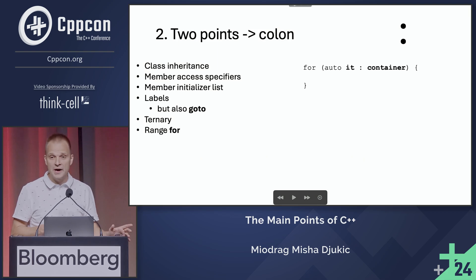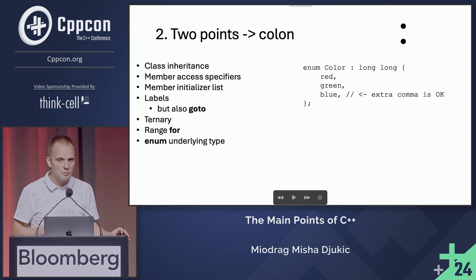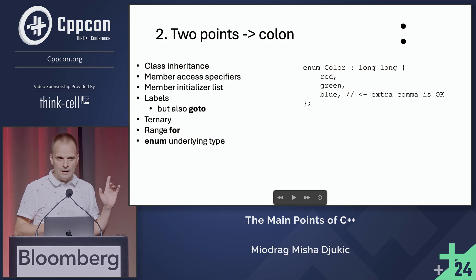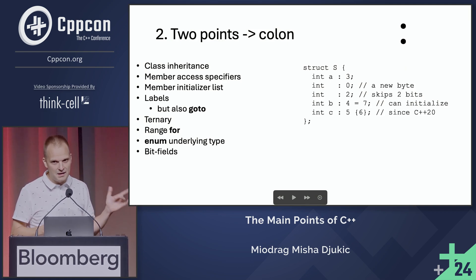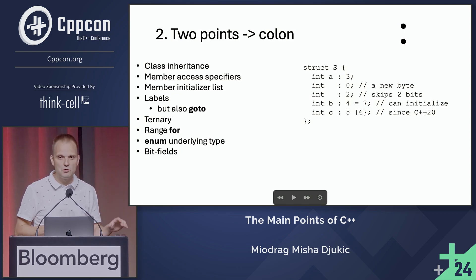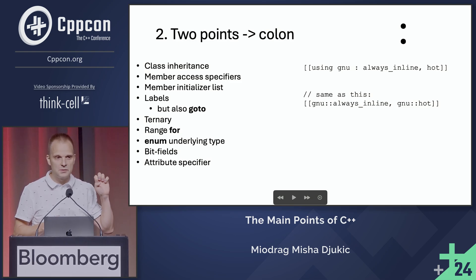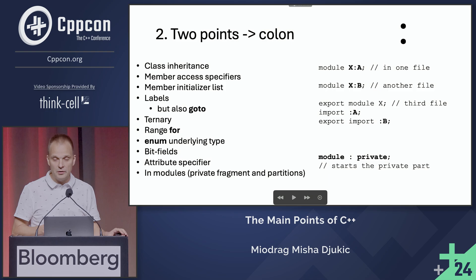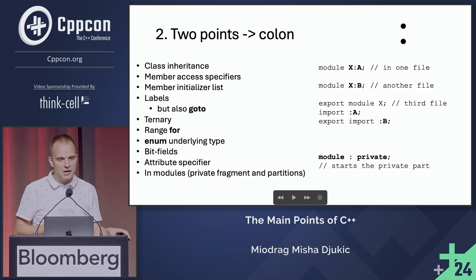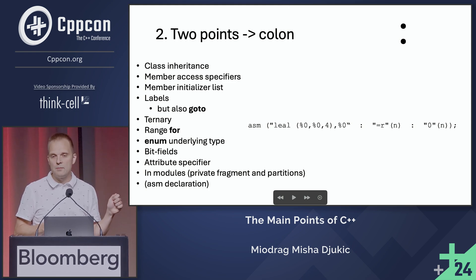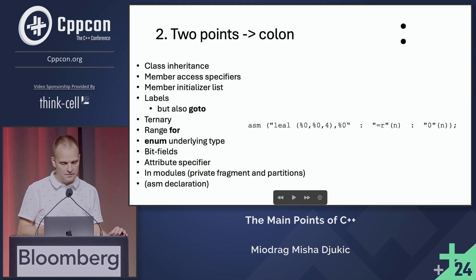Ternary operator, range-for, enum underlying type — and now it becomes a bit more difficult. Did anyone remember bit fields? That's an old thing but very often forgotten. We have two more relatively recent additions: one is attribute specifier, where we can group the common attribute namespace. And also in modules again, we have private fragment and partitions. This round has a bonus answer which is assembly declaration — it's not part of the standard, but GCC syntax is very often used.